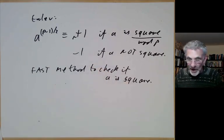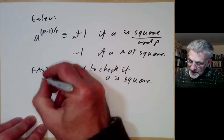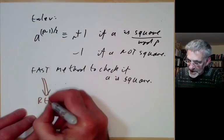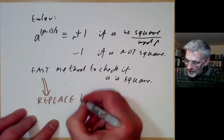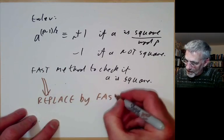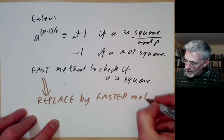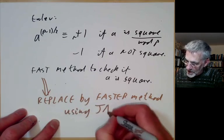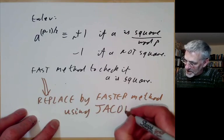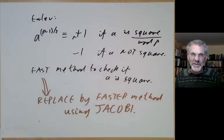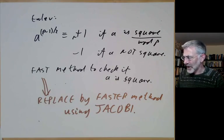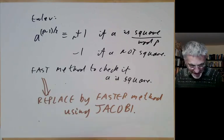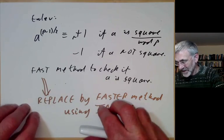This gives a fast method to check if a is a square mod p: compute a^{(p−1)/2} using the Russian peasant exponentiation and see whether it's 1 or −1. However, this is actually a rather bad fast method. Later we'll replace it with a much faster method using something called the Legendre or Jacobi symbol.